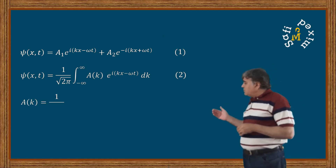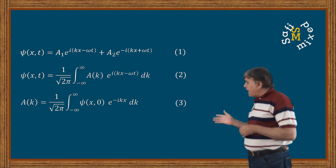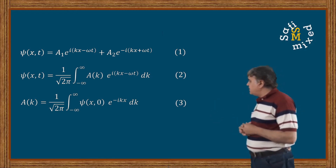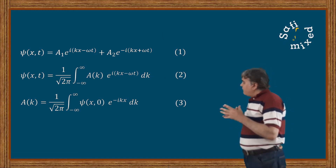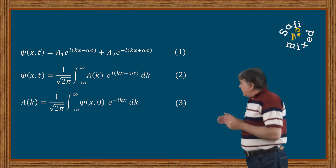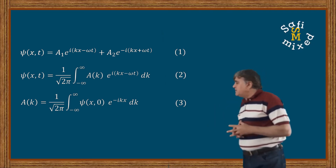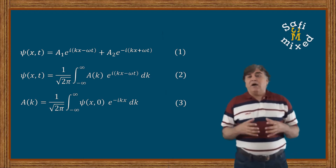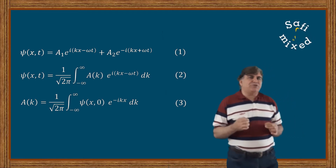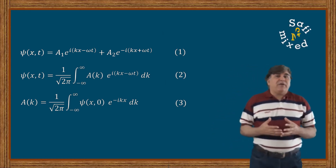A(k) can be found from the Fourier transform of the wave function ψ(x,t) at time t = 0. That is, A(k) is given by the Fourier transform as: A(k) = 1/√(2π) · ∫₋∞^∞ ψ(x, t=0) · e^(−ikx) dx.